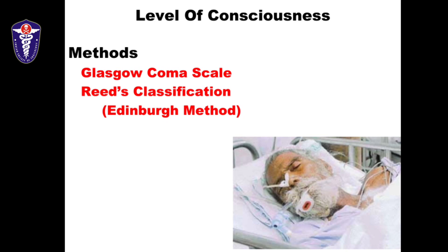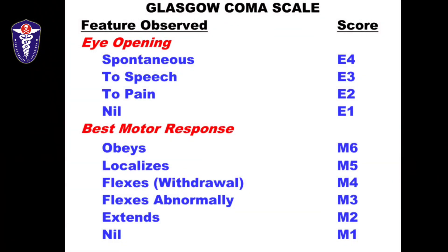The other score is the REITS classification — we will see both of them. The classical Glasgow Coma Scale scores up to 15 and has three basic parameters. Starting with E for eye opening: if the patient opens his eye spontaneously the score is E4; to speech it is E3; to pain it is E2; and if there is no eye opening it is E1.